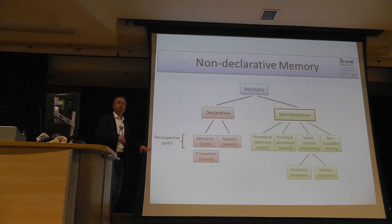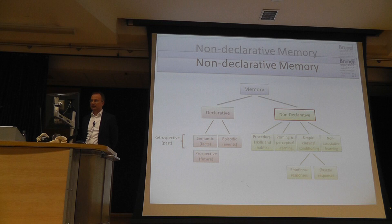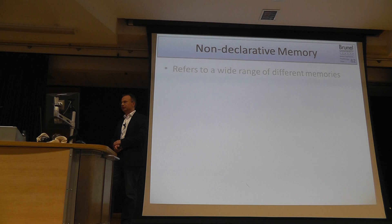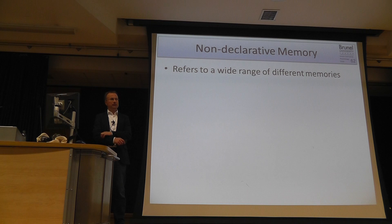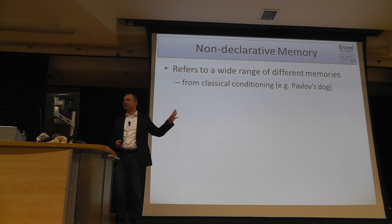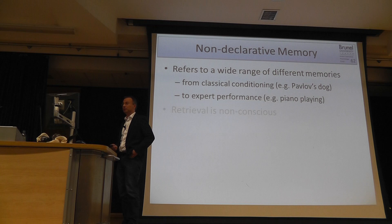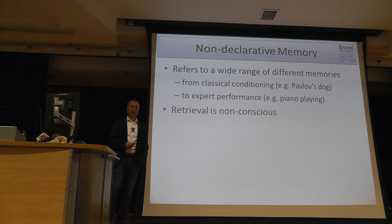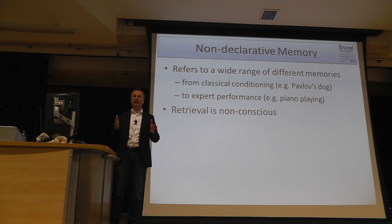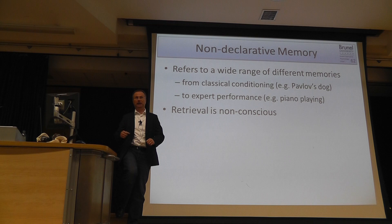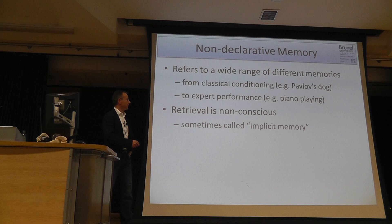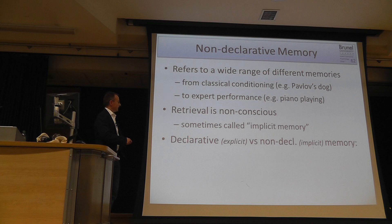Non-declarative memory refers to a wide range of modalities, from classical conditioning like Pavlov's dog to expert performance like playing a musical instrument. The retrieval is non-conscious and automatic — when riding a bike, you're not consciously thinking about each micro-adjustment needed for balance. This is why it's sometimes called implicit memory, in contrast to explicit declarative memory.